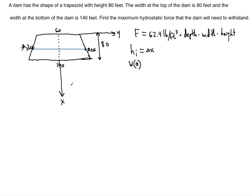It's convenient to use the x and y-axis here because we can look at the top first. When x is equal to zero — because the origin is at the top — the width is going to be 60, that's the top of the trapezoid. However, when x is equal to 80, moving toward the bottom, the width is going to be 140 — that's the bottom of the dam.